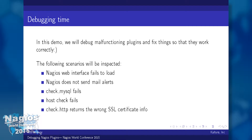In this demo, we'll debug a few malfunctioning plugins and, in general, a malfunctioning environment. I've basically installed a pretty vanilla Nagios and kind of messed it up so that we'll have fun together. The first scenario will be the web interface failing to load altogether. Then we'll have a problem sending emails. After that, our MySQL check will fail. Then we'll handle a host which blocks ICMP and therefore appears to be down on the Nagios web interface. And as a dessert, we'll check a problem where checking the SSL certificate for validity and expiry date returns wrong certificate information.